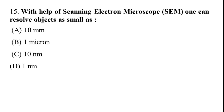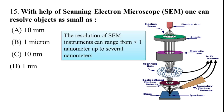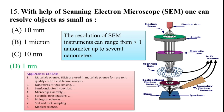Question 15: With the help of a scanning electron microscope (SEM), one can resolve objects as small as: A) 10 mm, B) 1 micron, C) 10 nm, D) 1 nm. The SEM range is 1 nanometer, so option D is correct. SEM is used in research laboratories for applications including nanowires, gas sensing, semiconductor fabrication, forensic investigation, and medical science.